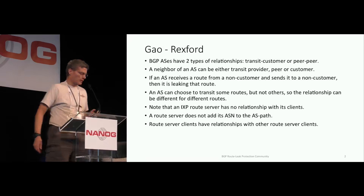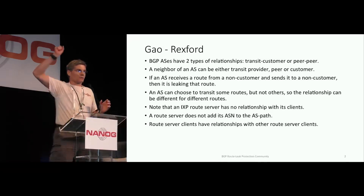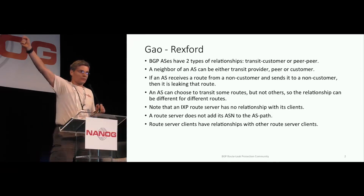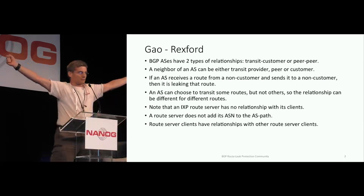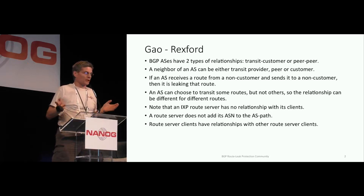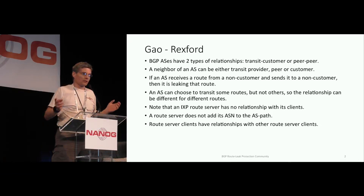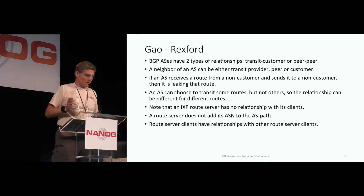What is a route leak? If you're an AS and you receive a route from one other AS and you send it to another AS, and neither side is paying you, then you're leaking the route. That's basically a route leak. Why does anyone care other than the AS that's actually doing the leaking? Because the AS that's doing the leaking is usually a small customer AS with very small pipes, and if you send the whole internet to him, he's going to drop it all. So that's why you care.